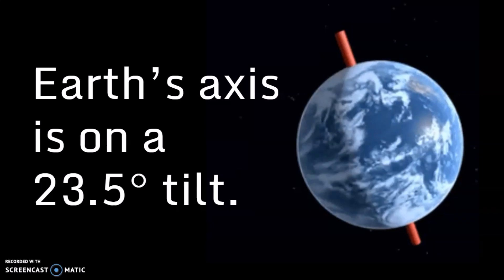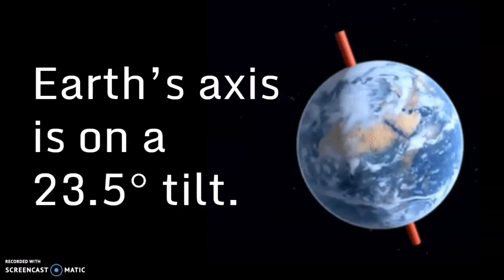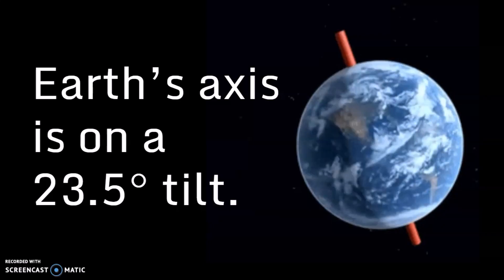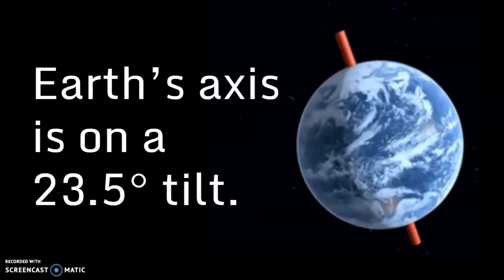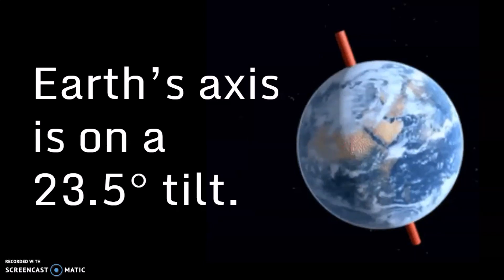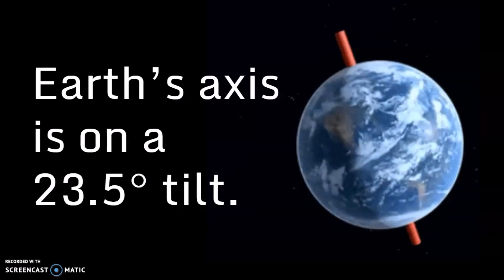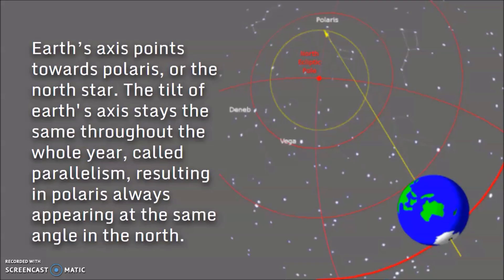The path around the Sun is the Earth's plane of orbit, but Earth's axis isn't perpendicular to the plane, meaning it's not going to be standing straight. Rather, Earth's axis is on a 23 and a half degree tilt. Earth's axis points towards Polaris, or the north star, which we talked about earlier this year.